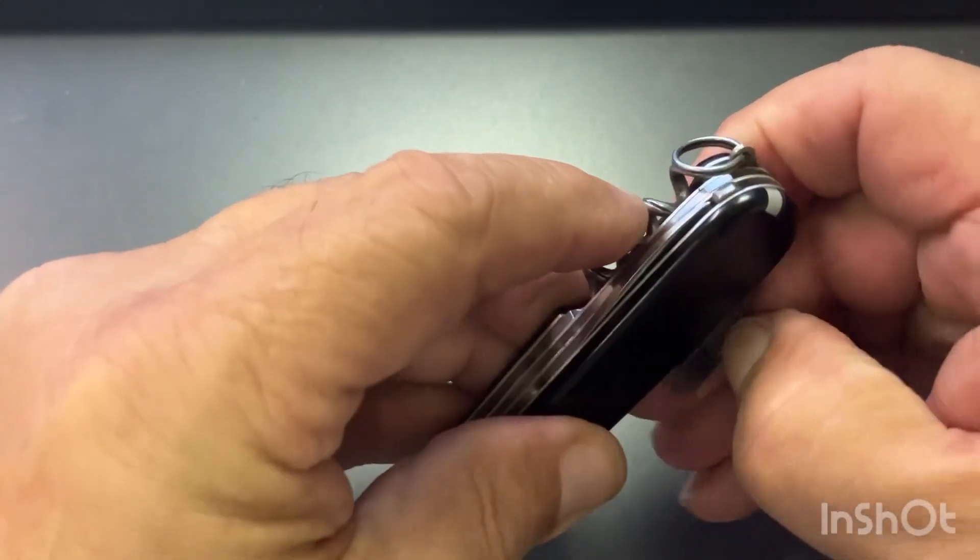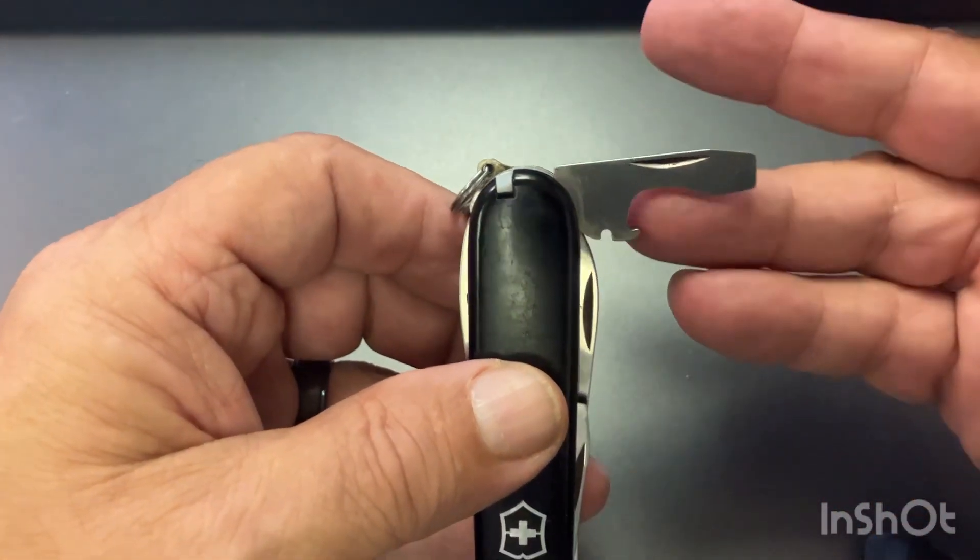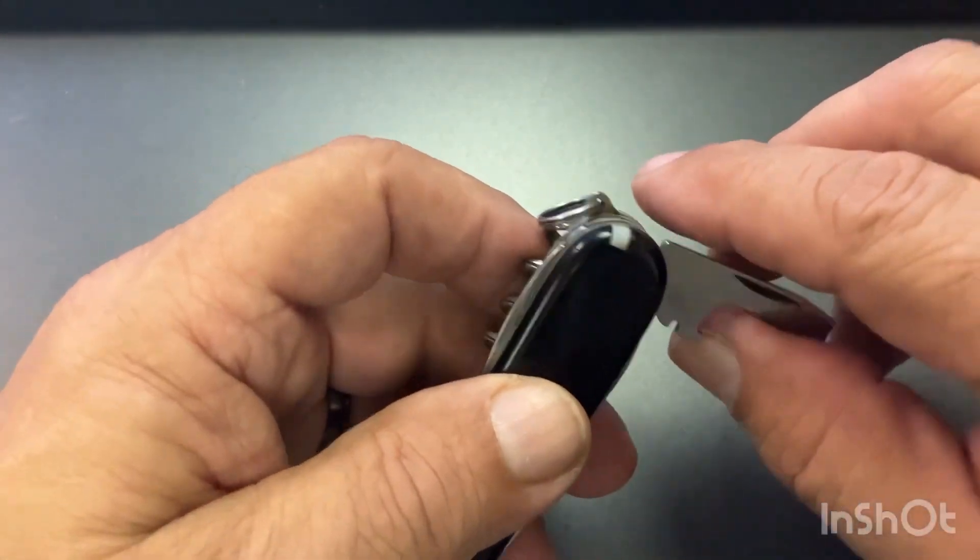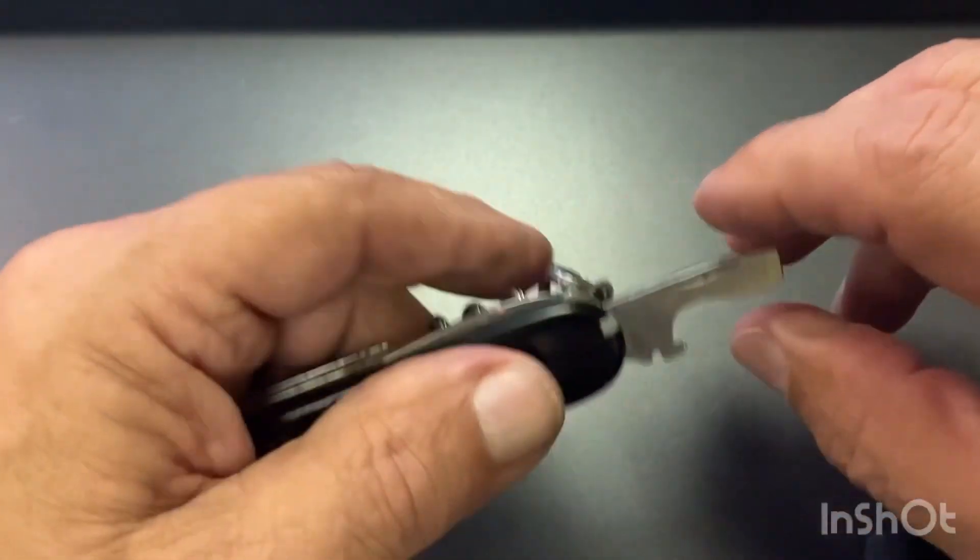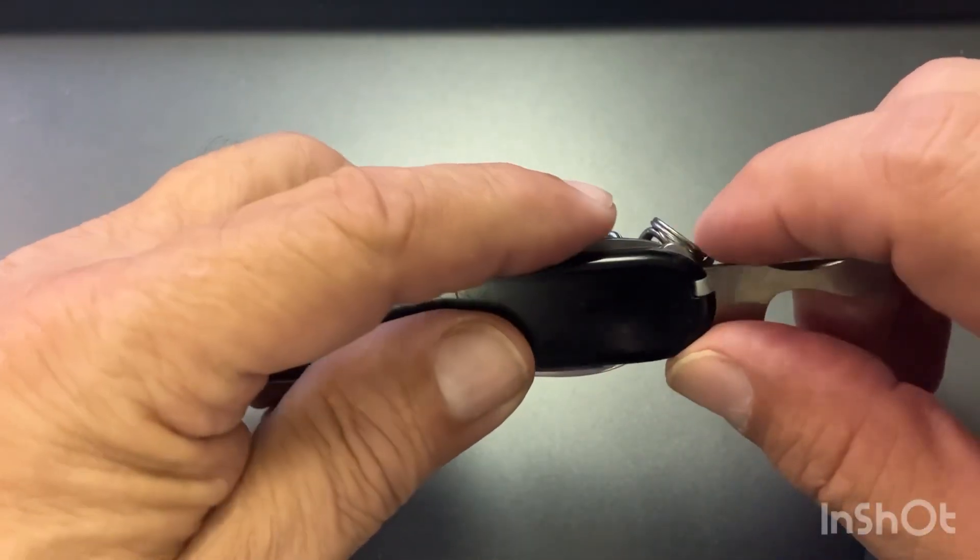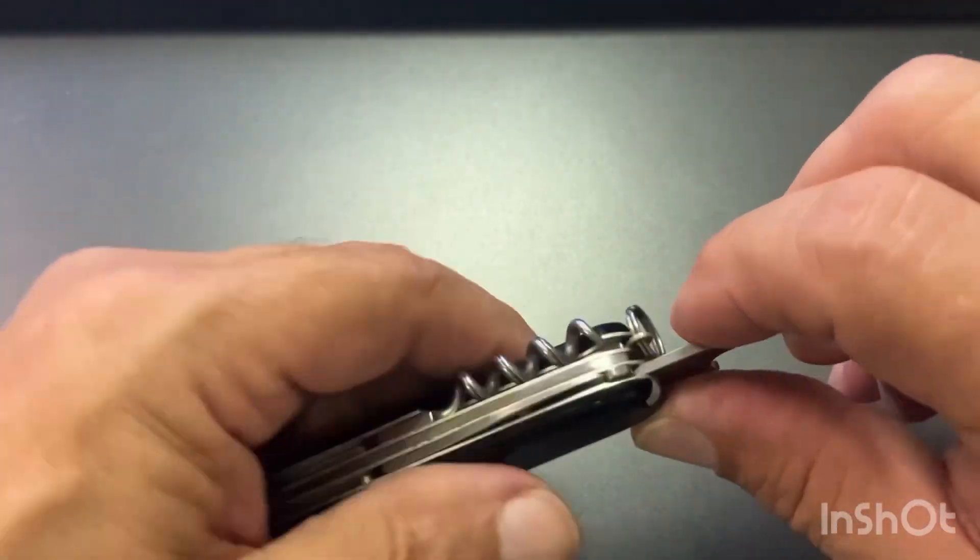We've got the flat tip here with the wire stripper and the bottle cap lifter. This one has a 90 degree detent, and it snaps into place there.